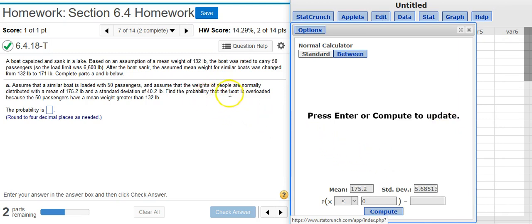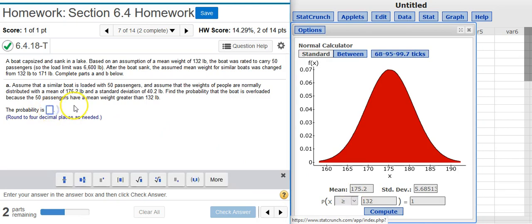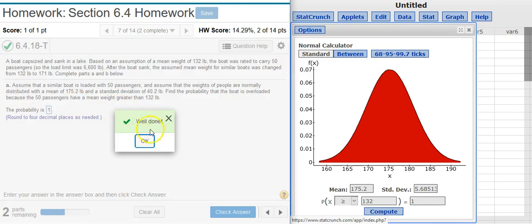There's my adjusted standard deviation. Now, we want the probability that the 50 passengers have a mean weight greater than 132. So, 132. And then this needs to be greater than. Looks like it's 100%. So, our probability is 1. Well done!